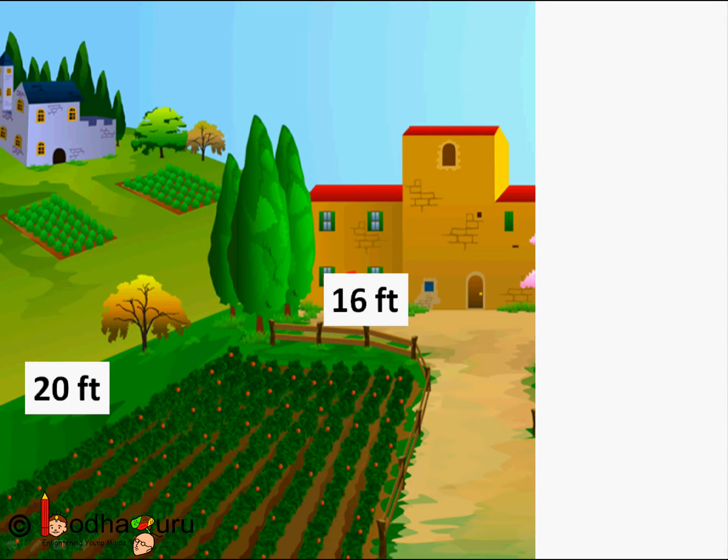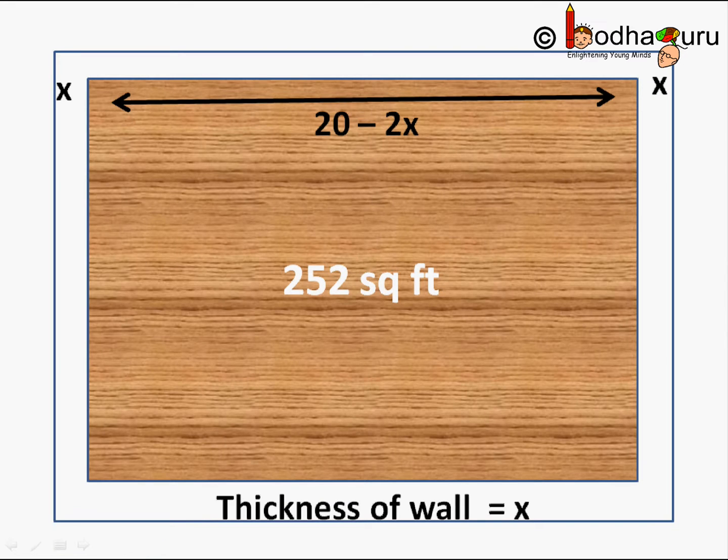Aman has a small garden 20 feet long and 16 feet wide. He surrounded it with a thick border wall to stop trespassers. After putting the border wall, he found out that only 252 square feet is remaining for gardening. What is the thickness of the wall he built?